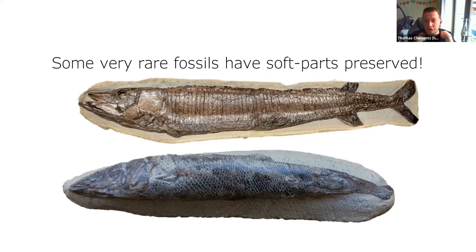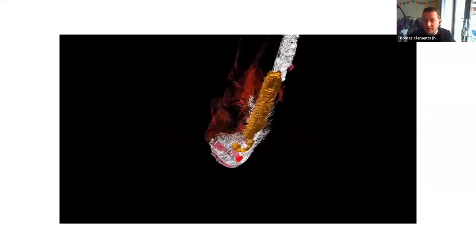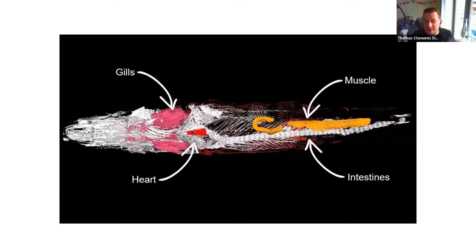What I'm really interested in are fossils that aren't just skeletons. These are fossil fish from Brazil — about 60 million years old, from a place called Santana — and you can see they have beautiful fossil skin and all of their scales preserved. Even more amazing: if you put them in an X-ray machine, the same sort of machine you'd go in if you broke your arm, we can see inside them. The soft tissues like the internal organs are still preserved and have been turned to rock — we can see the gills, the heart, the muscles, even the intestines.